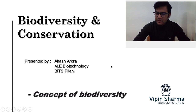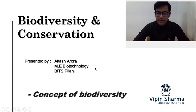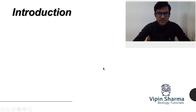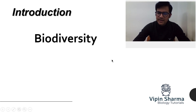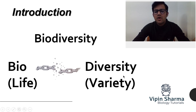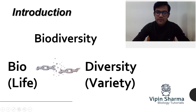Hey guys, this is Akash here for Weapon Sharma Biology Tutorials. Today I'm going to start this new chapter — Biodiversity and Conservation — and we are on the first topic: the concept of biodiversity. Starting with the introduction, let's understand what biodiversity is by breaking it down into two major parts: 'bio' and 'diversity.' Bio means life, and diversity means variety.